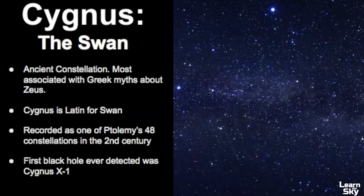Let's begin with a broad overview of Cygnus. It's an ancient constellation often associated with Greek myths about Zeus in Western culture. The name Cygnus is Latin for swan, and it was recorded as one of Ptolemy's 48 constellations in the second century. What's interesting is that the first black hole ever detected was in the boundaries of this constellation, and it was labeled Cygnus X1.